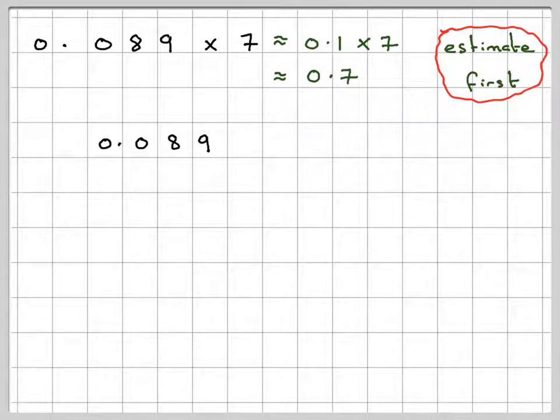So setting the answer out, 0.089 times 7. Don't worry about the decimal point to begin with. So do 7 times 9, which is 63. So it's 3. Carry the 6.